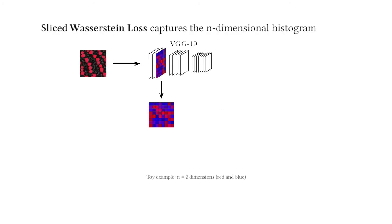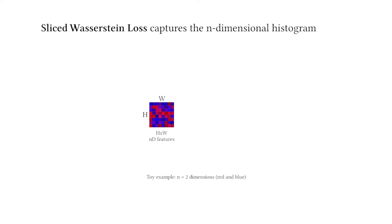Let's take this toy two-dimensional deep feature activation. To compute our new loss function, we first discard the spatial structure of feature activations. This yields an n-dimensional point cloud, also known as the n-dimensional histogram. We then define our loss to be the optimal transport distance between two histograms in this space.